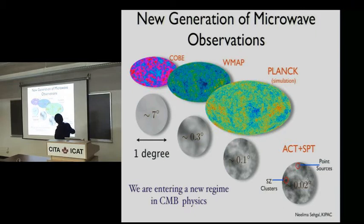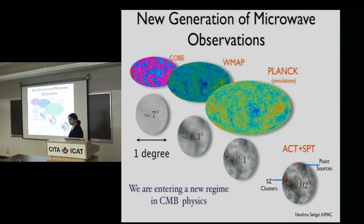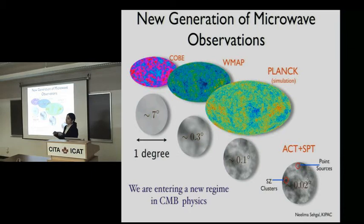Here's the progression of CMB experiments: COBE, WMAP — you can see how the angular scale has been changing. Now with Planck, which just released first results in January, and ACT and SPT, for the first time we have arcminute-scale resolution of one to two arcminutes, which matches the size of galaxy clusters. We can use all the clusters in the map as well as point sources. The noise sensitivity is much better than the other maps.